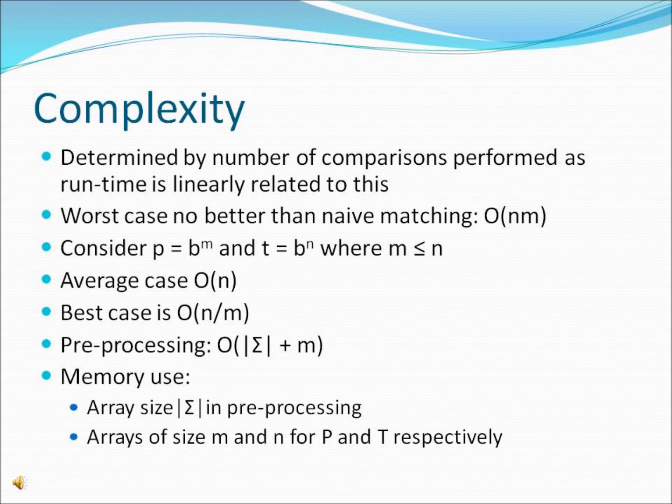However, the Boyer-Moore-Horspool algorithm is much better over larger alphabets and performs in O(n) time on average, with the best case O(n/m). The preprocessing stage of the algorithm will take O(|Σ| + m).